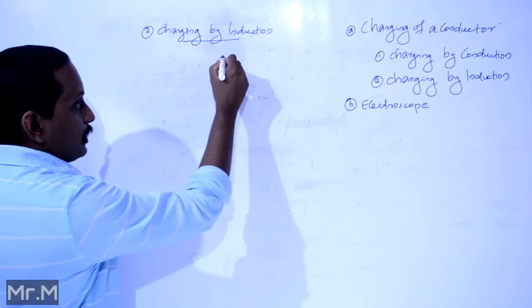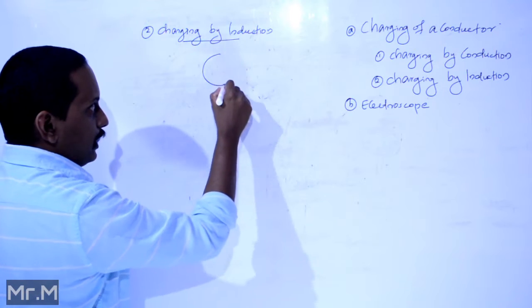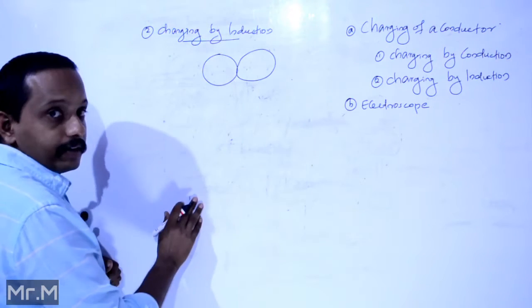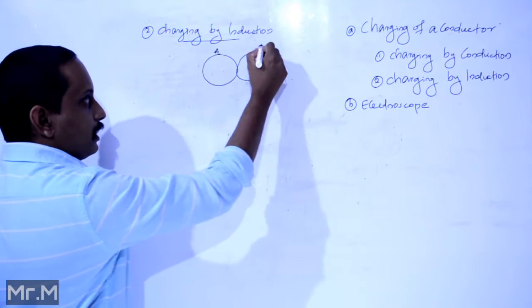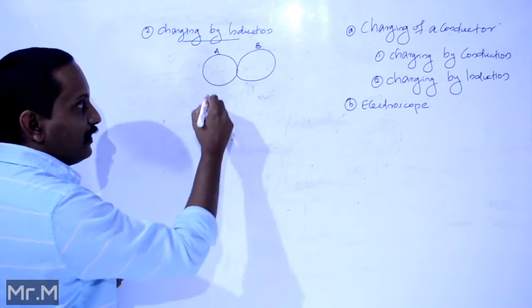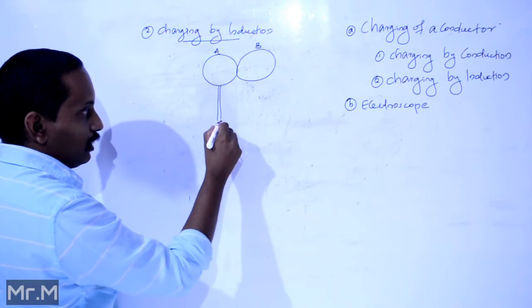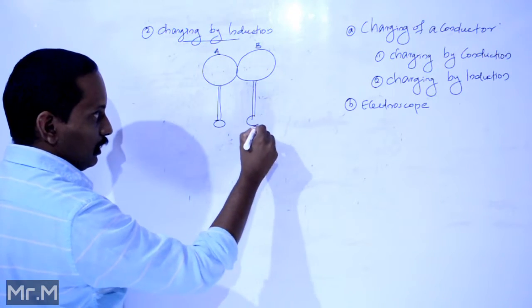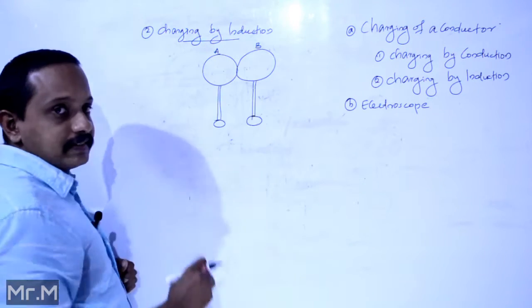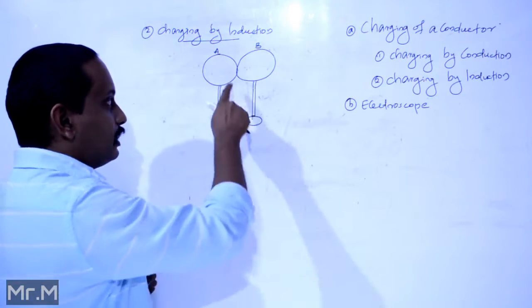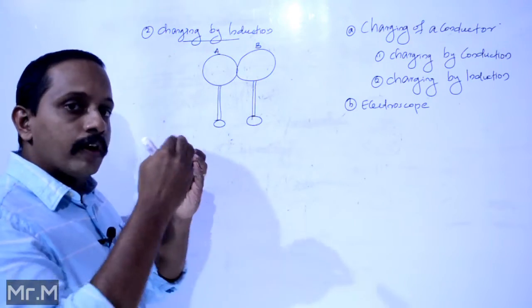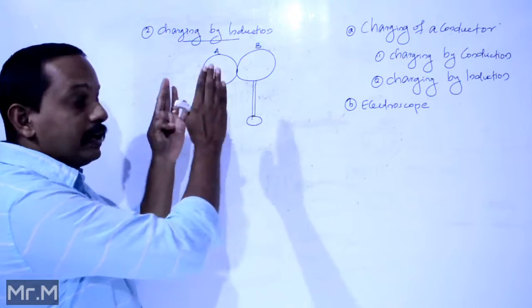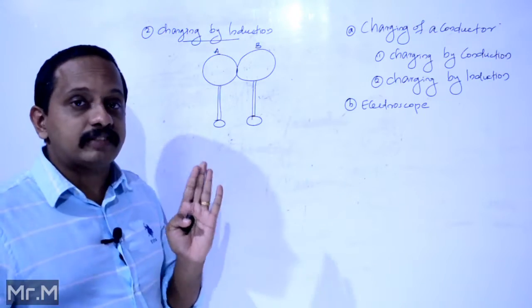Now we have two spherical objects named A and B. These two spherical objects are in contact with each other and are uncharged, placed on insulated stands.